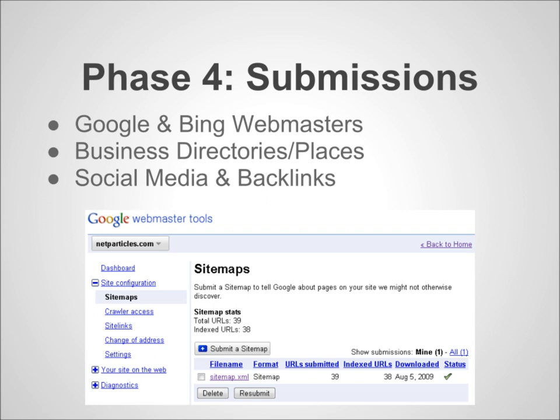Phase 4 is submissions. This is where we take your perfected site, create a sitemap — which is basically a file — and hand deliver it to the search engines such as Google, Bing, and Yahoo, making sure that they are reading your site exactly the way you built it and the way you want their robots to read it. Because websites are built for two different audiences: the humans — your target market — but first, for the robots sent out into the web to read your website on a daily basis. It's very important to have your website perfected in the first three phases before entering phase 4, spreading your website around the web and delivering it to places like business directories, your local Google Places, your social media, and your backlinks.